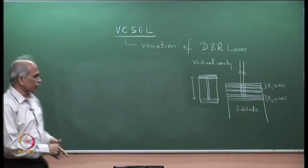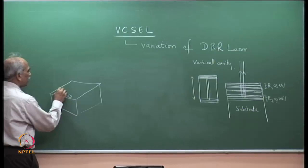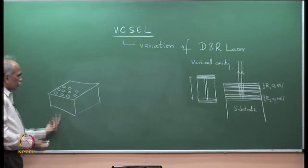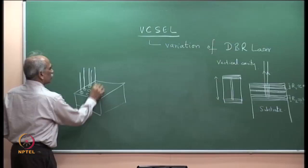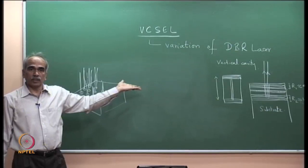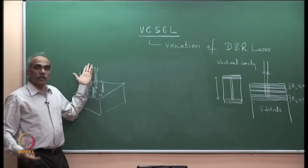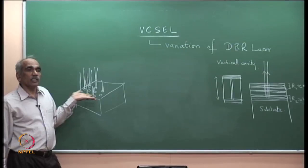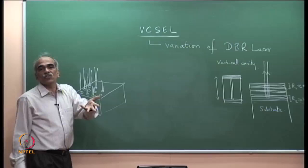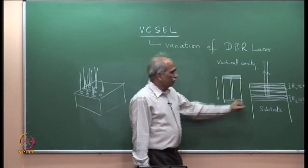Why do we want such a structure? On a chip you can grow a large number of lasers, all emitting upward from the surface — an array of lasers emitting from the surface. There are several applications for such arrays, including pumping other lasers. Today there are lasers giving up to 1 watt in this structure. Initially, when VCSELs were made, the output was very small — tens of microwatts — but today hundreds of milliwatts from each element is possible.